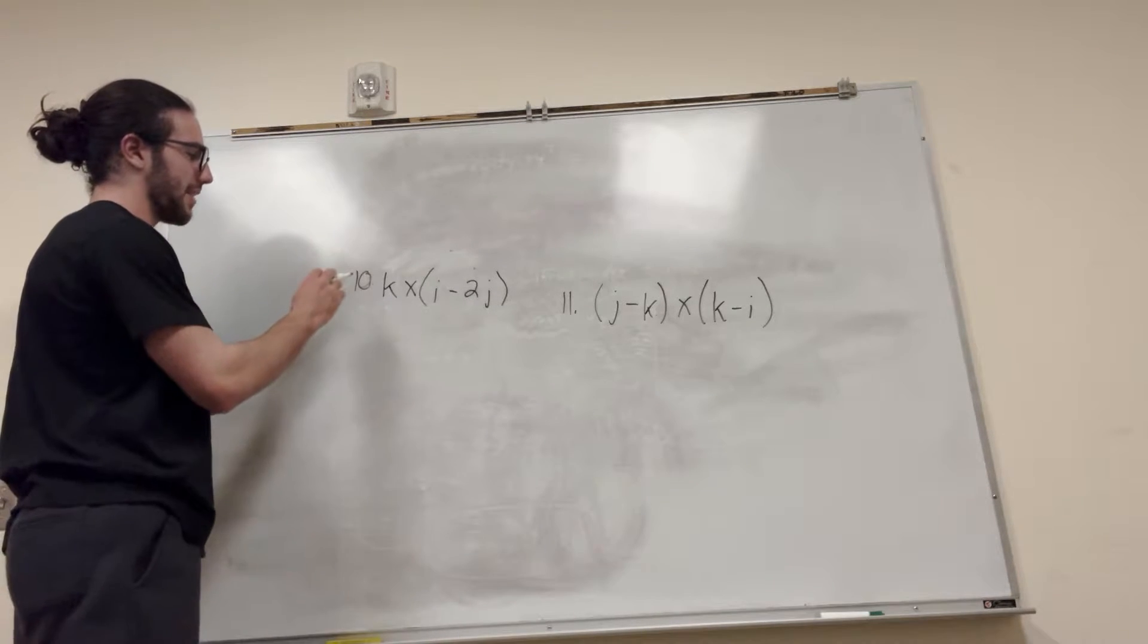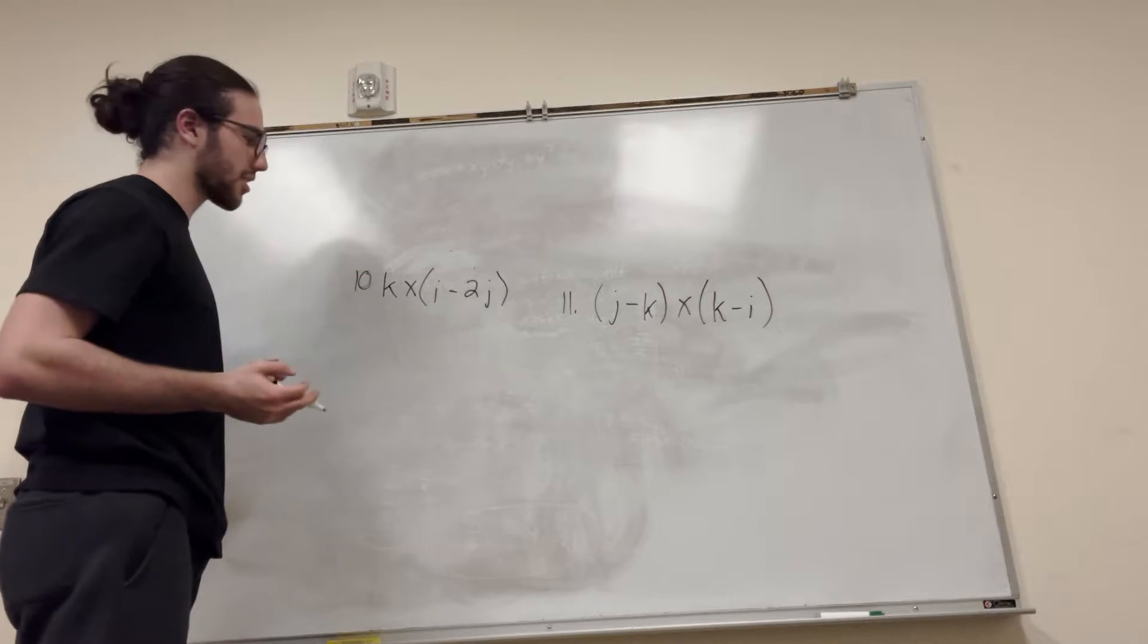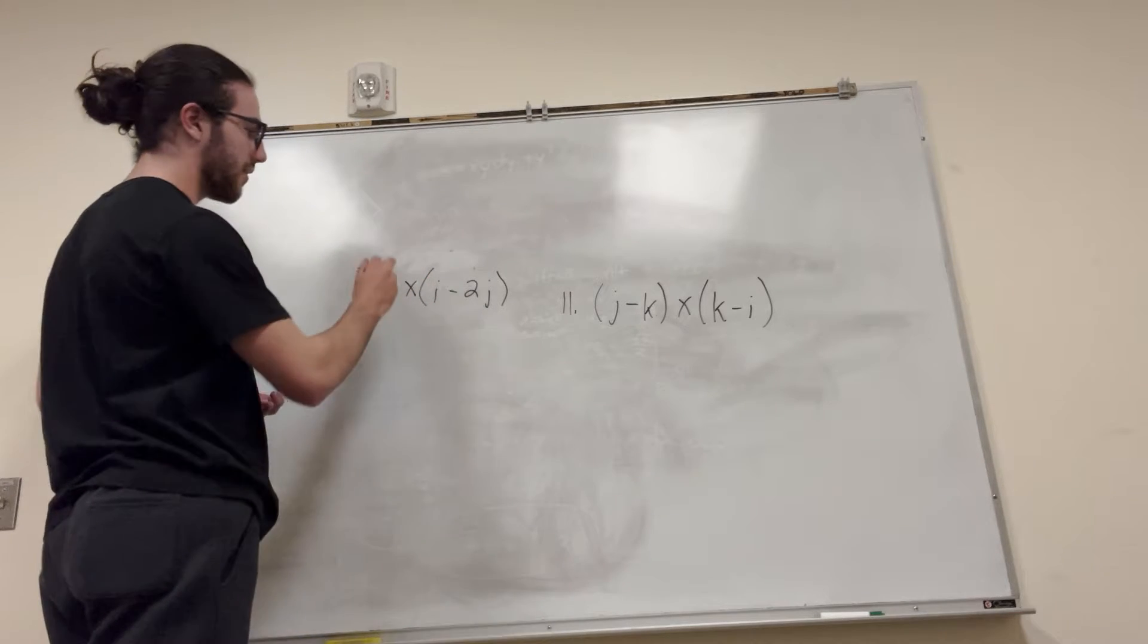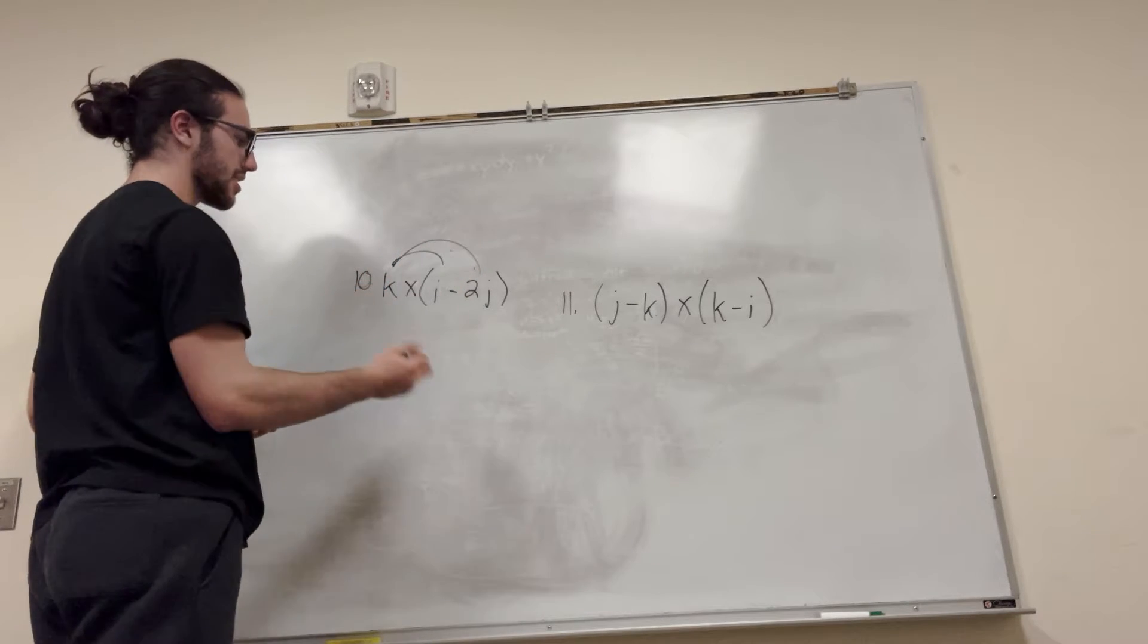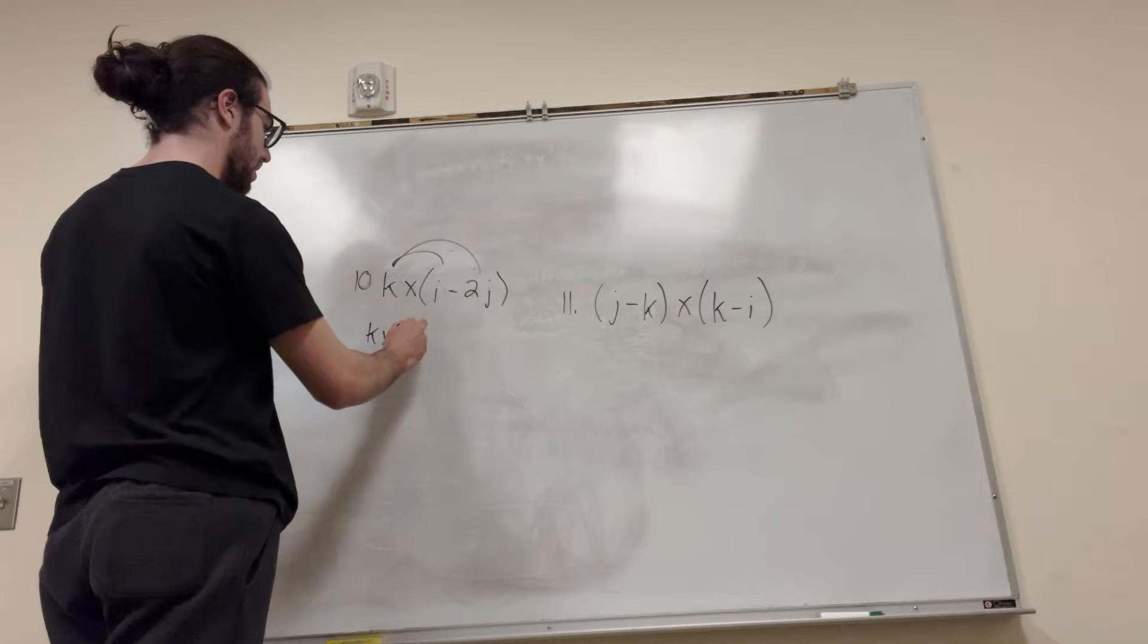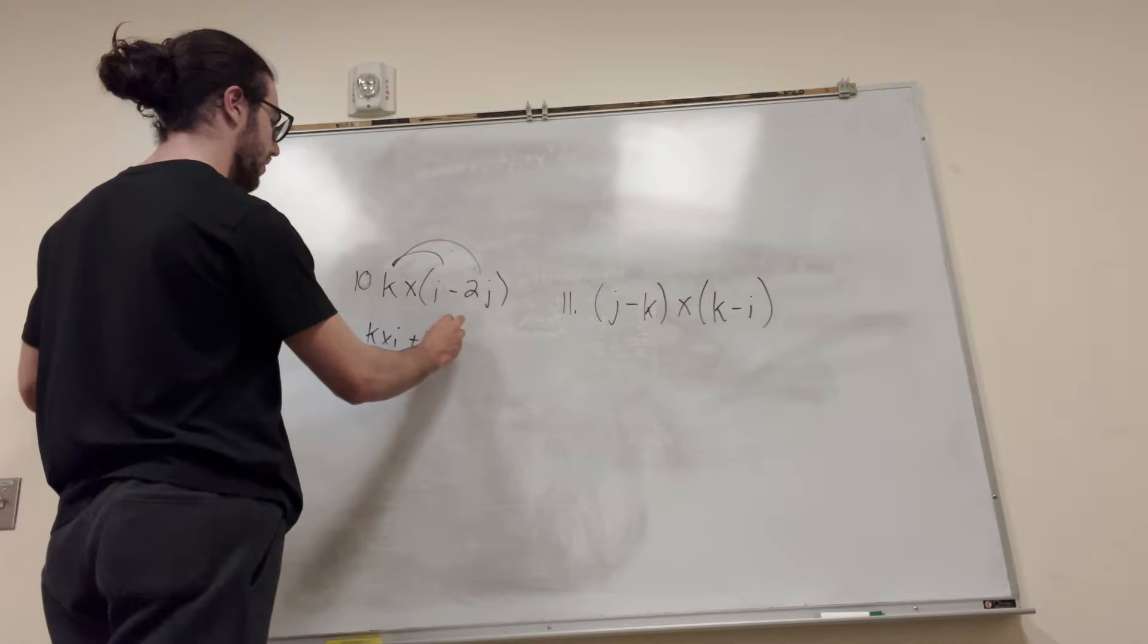So what you do, basically, when you have a vector crossed with a function, or not a function, but parentheses, is you can FOIL it just like you'd FOIL numbers, right? So that would be k cross i plus k cross negative 2j.